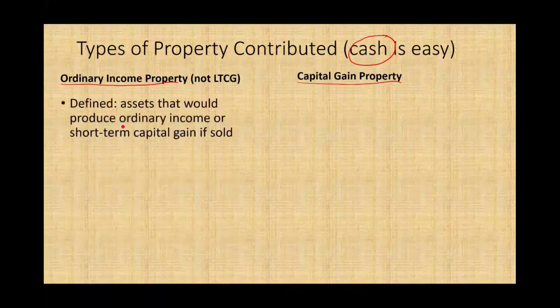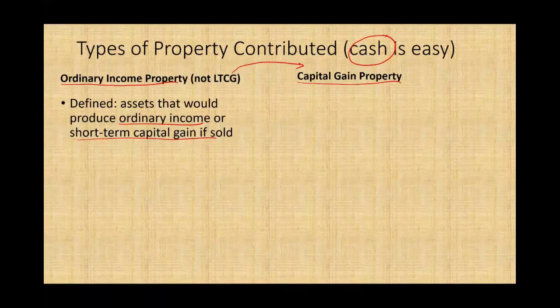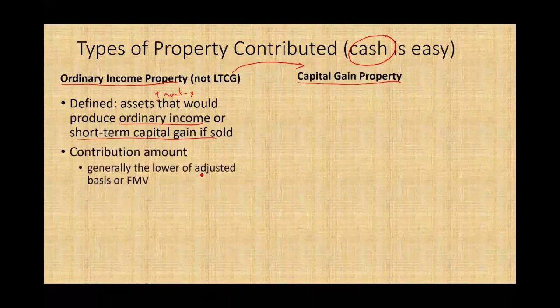Ordinary income property is an asset that would produce ordinary income or short-term capital gain if sold — it's not long-term capital gain property. If you contribute ordinary income property, which would also include inventory, the contribution amount is generally the lower of the adjusted basis or the fair market value.